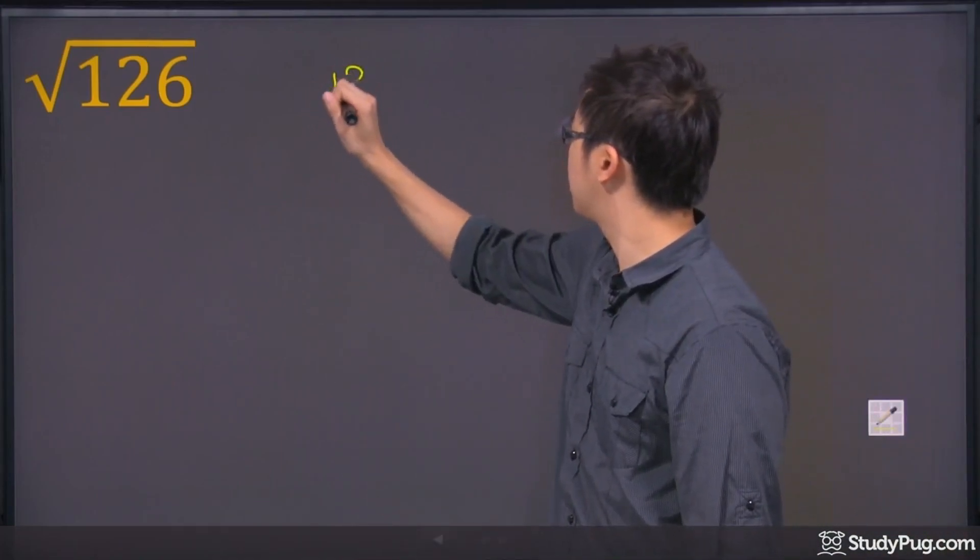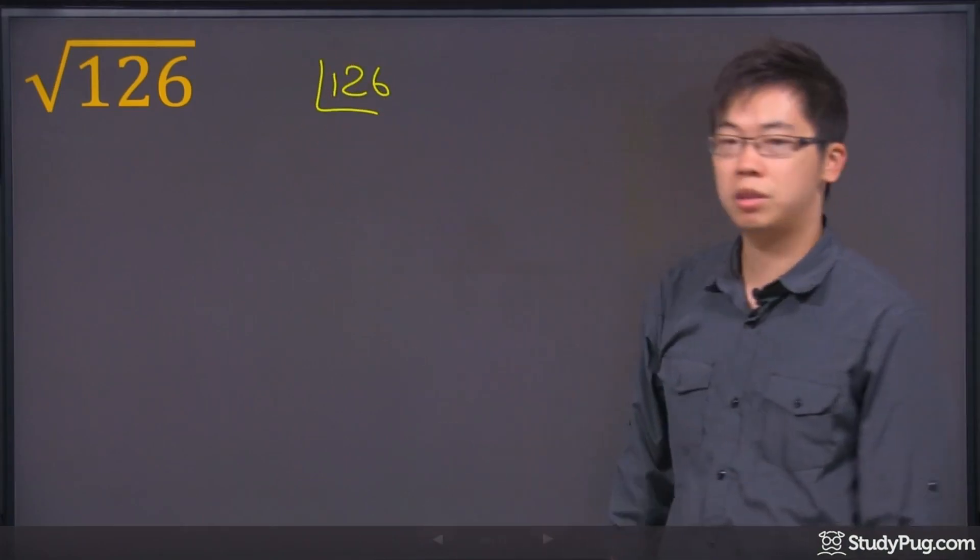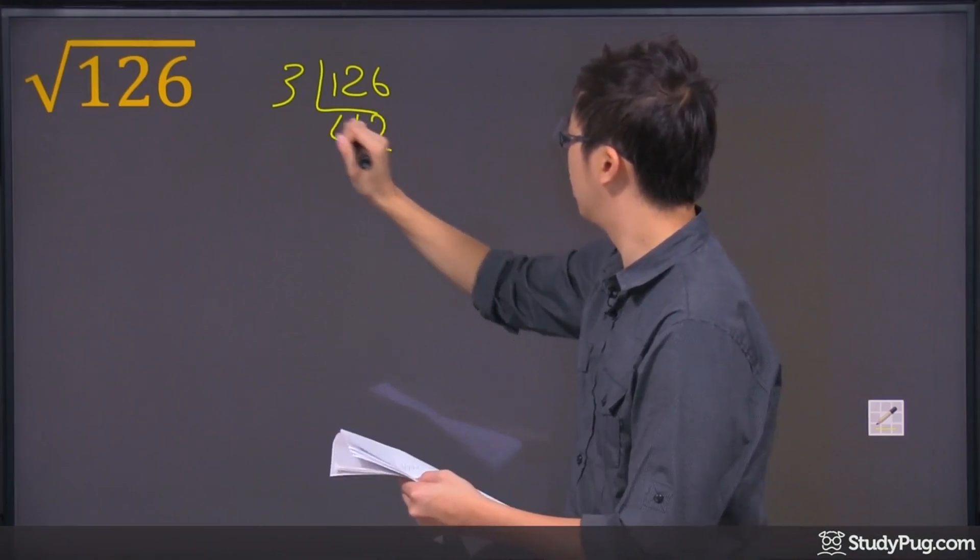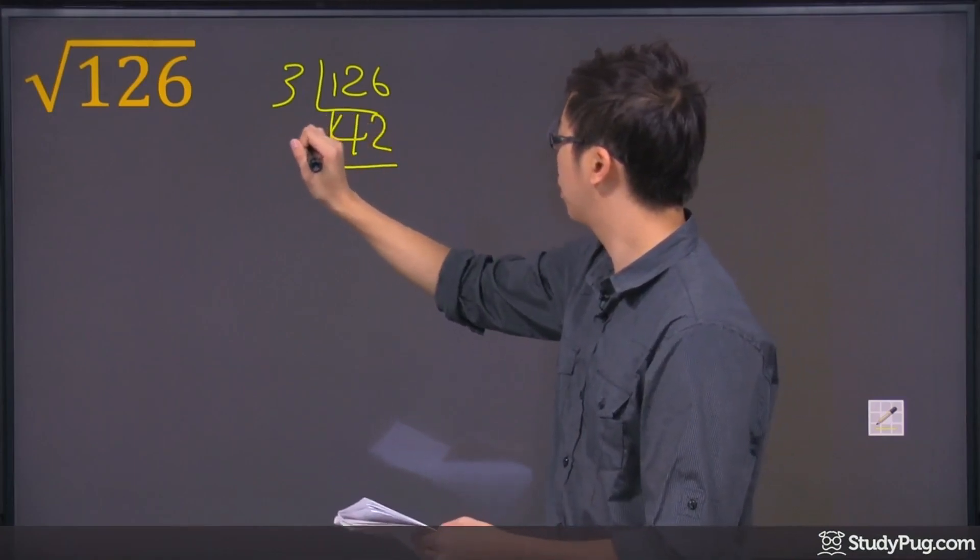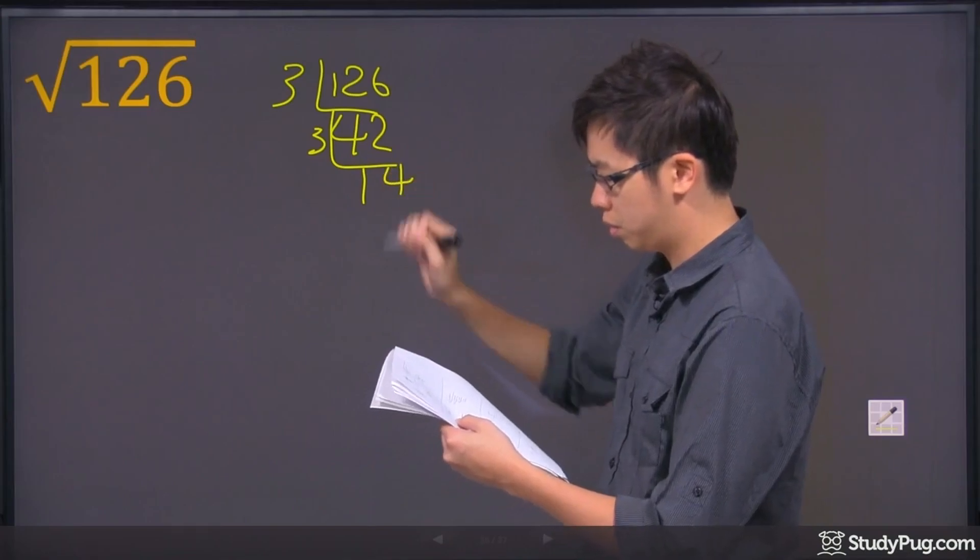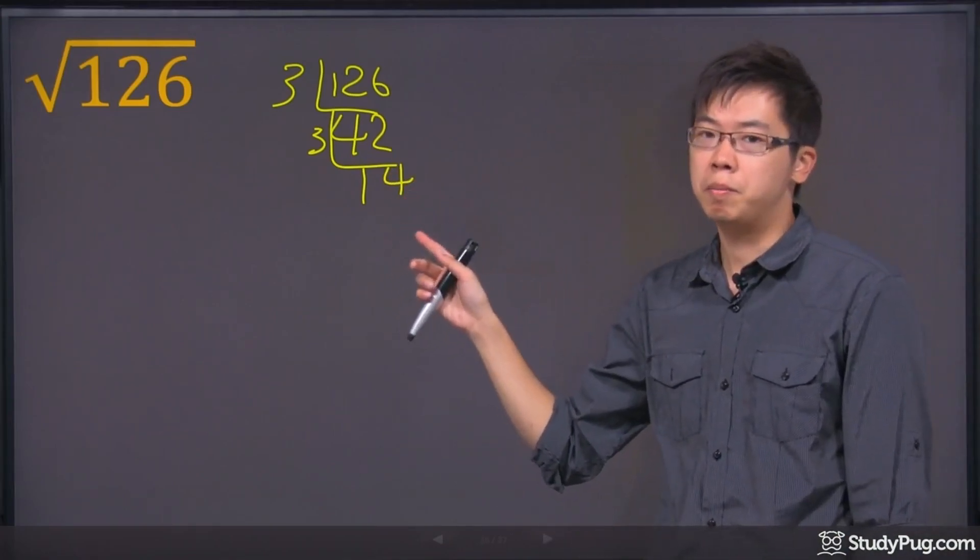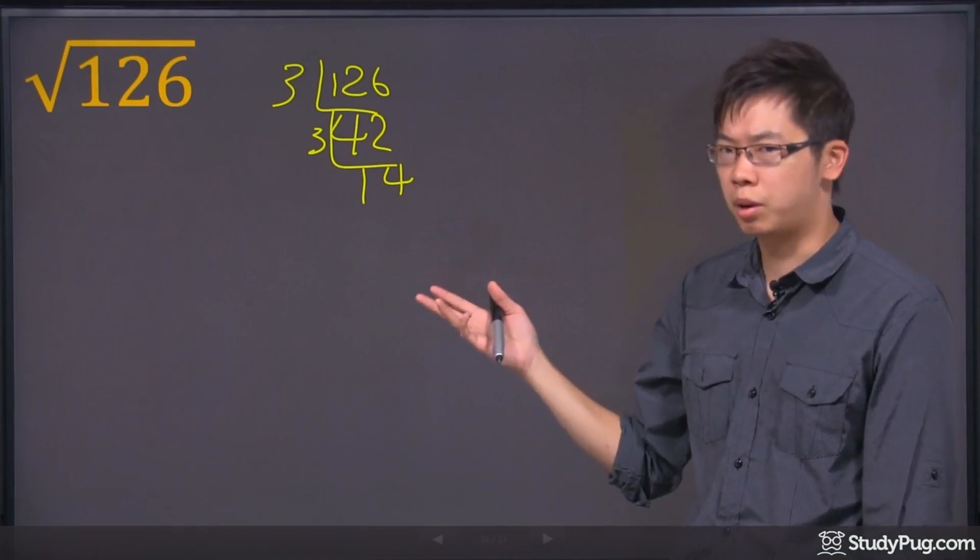So we got 126 and if you do the prime factorization, the first one will be a 3 that I have right here and we got a 42 and we also got another 3 here with another 14 here. Now, this is not a prime number, but actually it is a prime number.